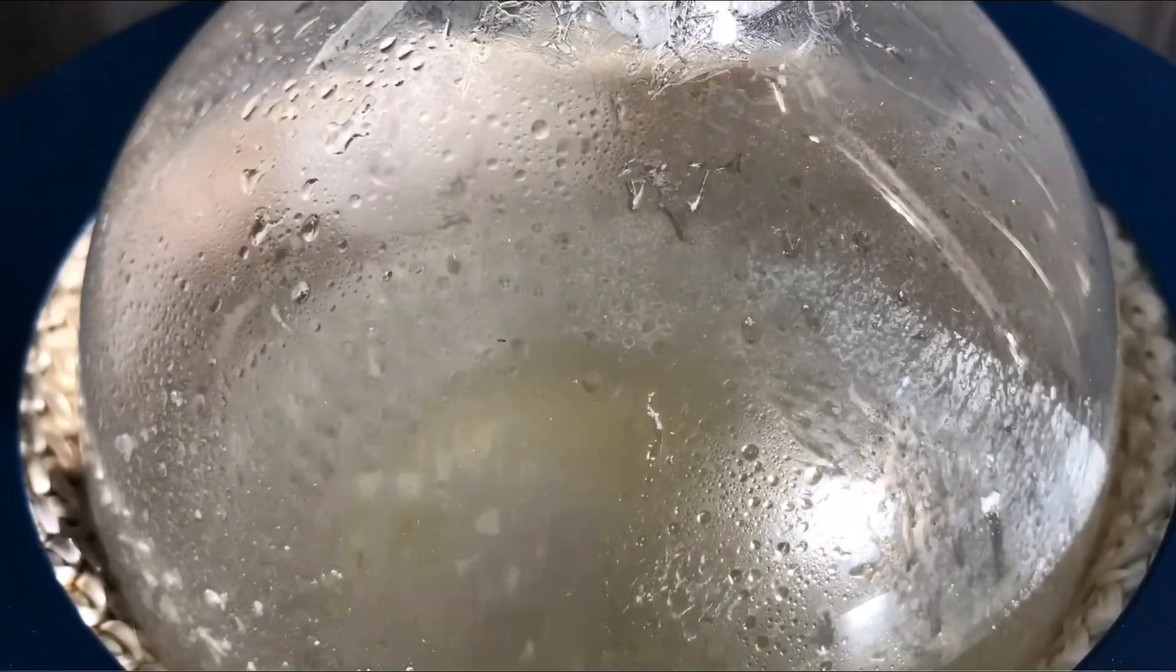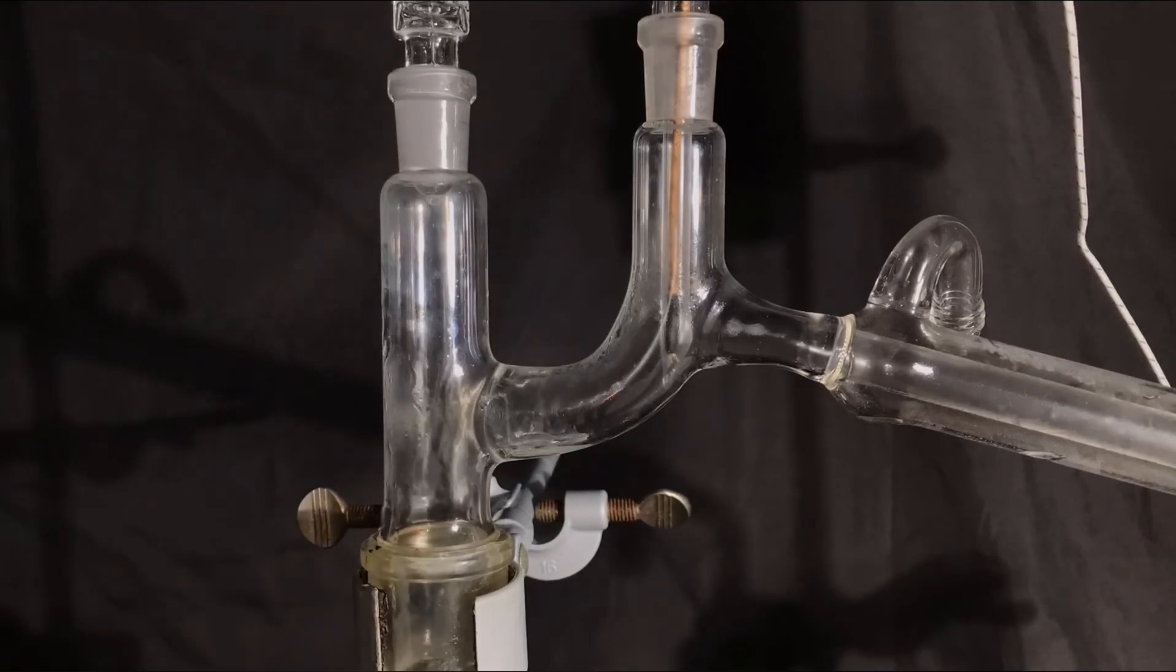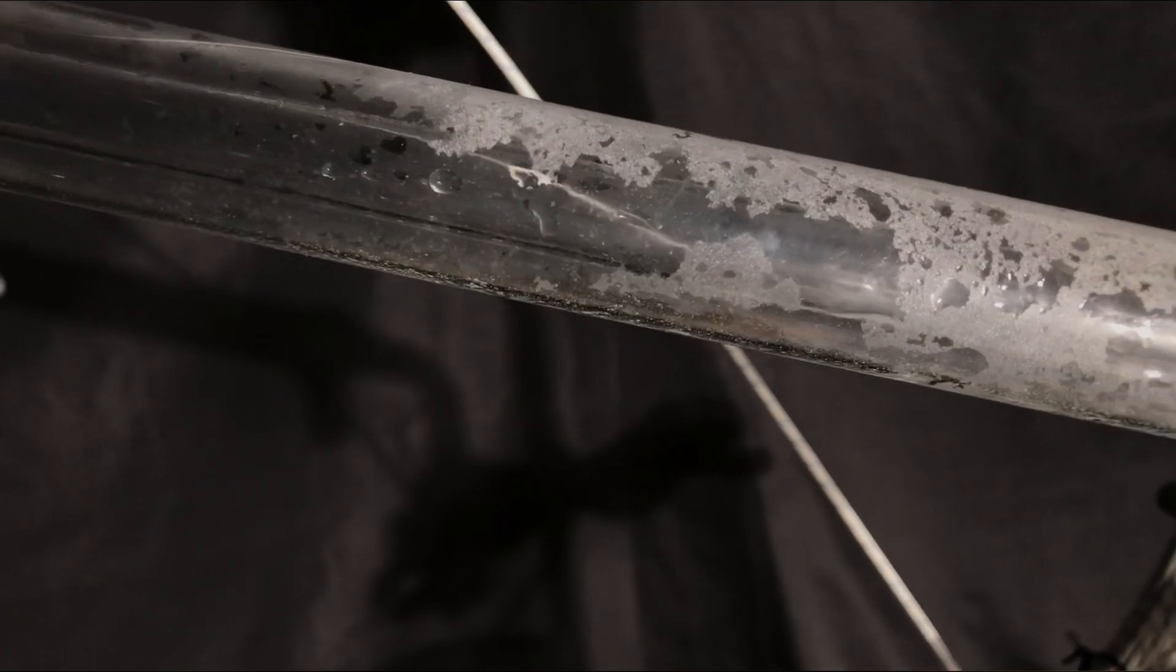After a while, the crude phenol started to melt and then started to boil. It quickly made it over into the air-cooled condenser. In the condenser, it looked like we had some pulsating smoke.